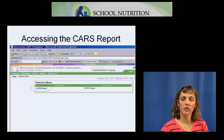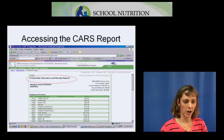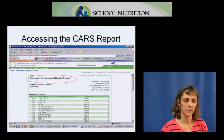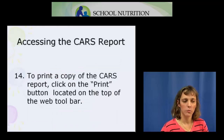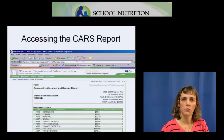After you've clicked on CARS Report, it will automatically display the CARS report for the program year you're in. This shows all the commodities you've received, the value, and the total cases. To print a copy, click the print button located on the top of your web browser toolbar — it is not part of the system itself. Click print and it will automatically print out a copy for you.